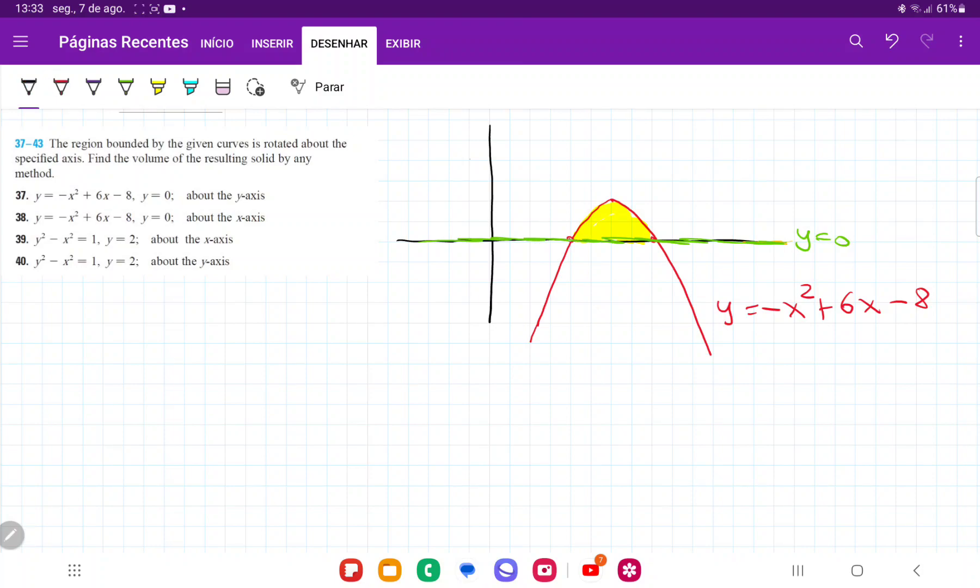The first thing that we have to do is find these two points of intersection so that we know our bounds of integration. We're going to set these equal to each other. We're going to say that minus x squared plus 6x minus 8 is equal to 0. I'm just going to multiply everything by minus 1 so we can factor it. So that's x squared minus 6x plus 8 equals 0.